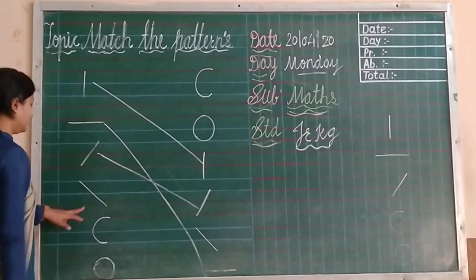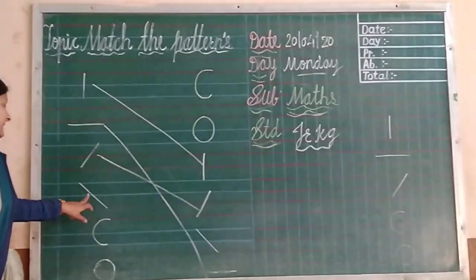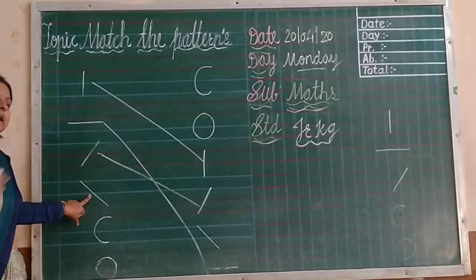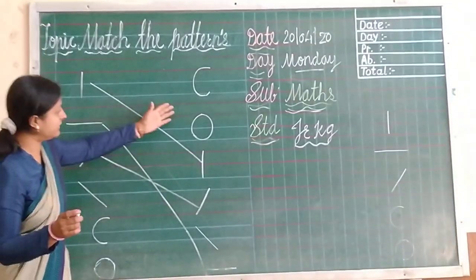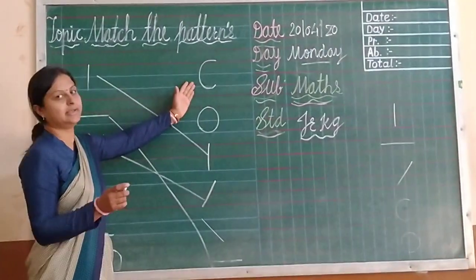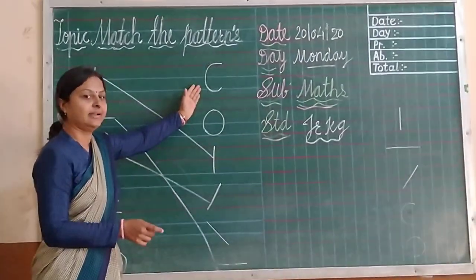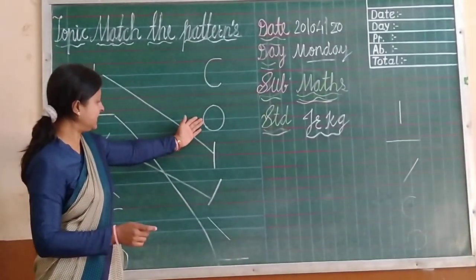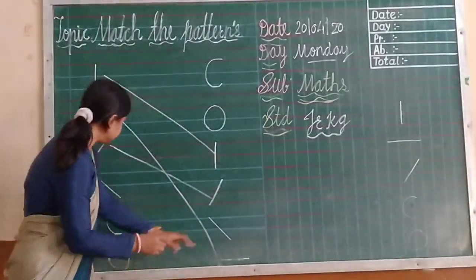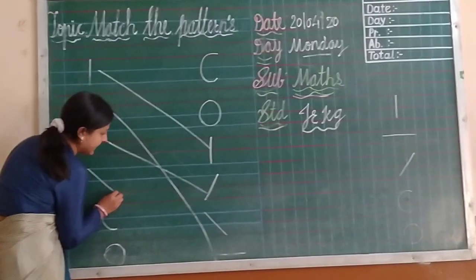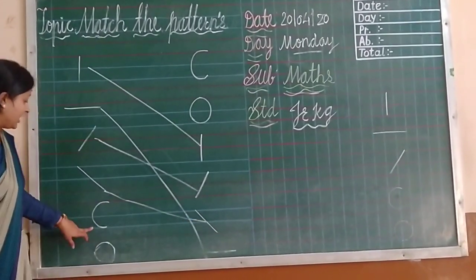Now which pattern is this? This is also slant line. So in this row, where is slant line? This one — is this slant line? No. Is this it? No. This one is slant line. Very good, so match it.